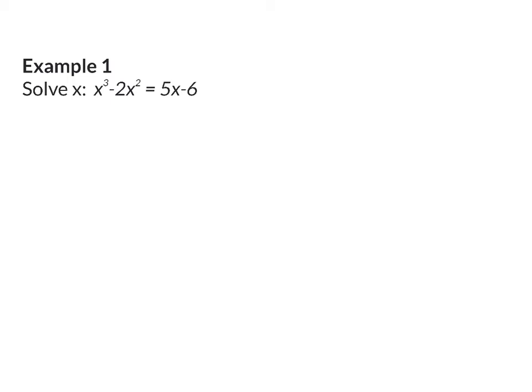When solving a cubic equation, it is similar to a quadratic equation, where you have to get all the terms on one side equal to zero, so that you can factorize and then solve. So here our first step is going to be to get all the terms on one side and put that equal to zero.